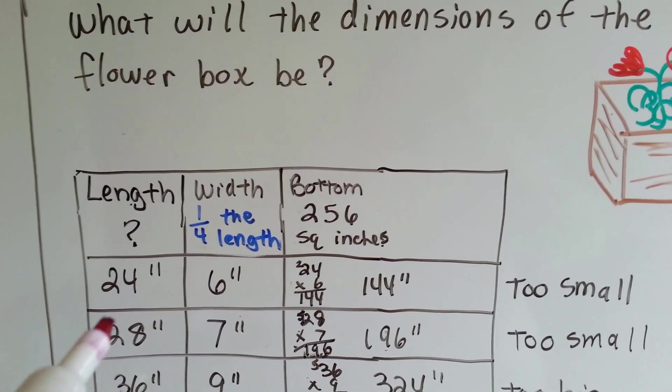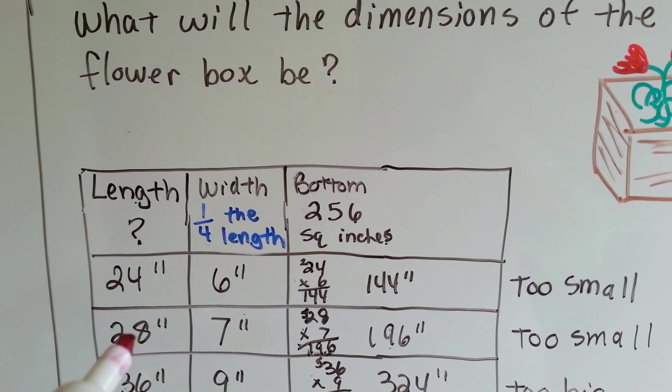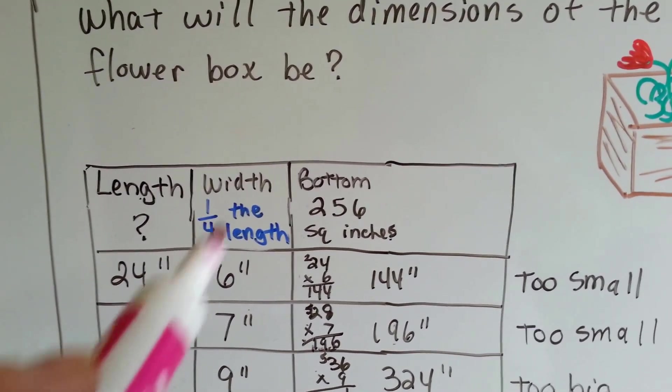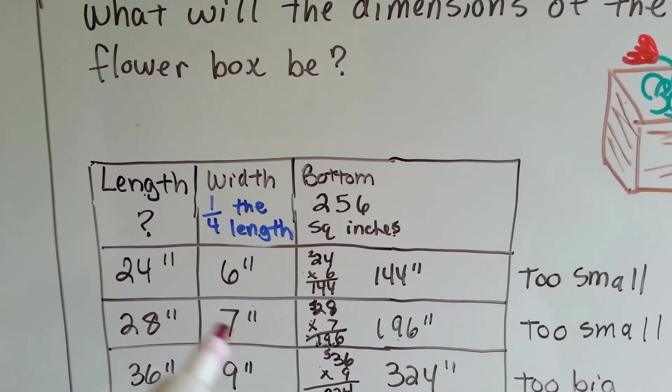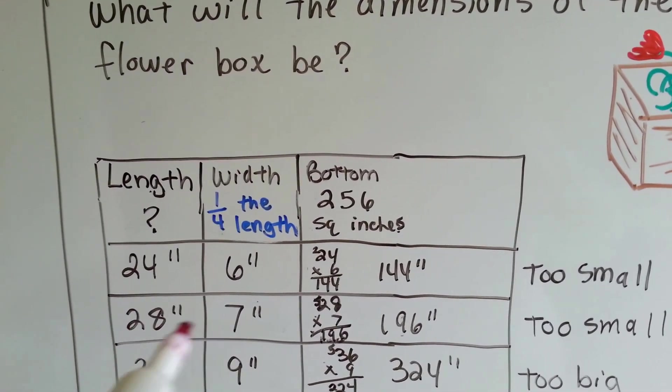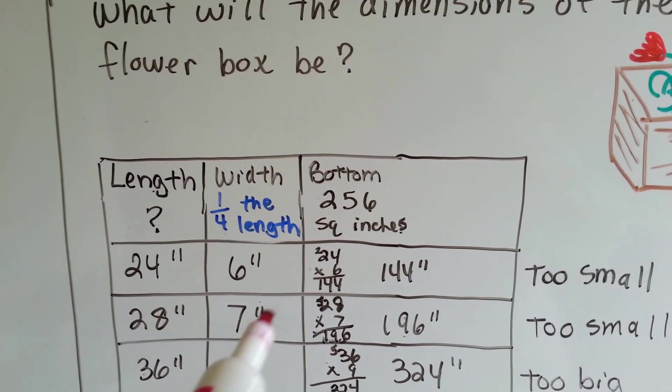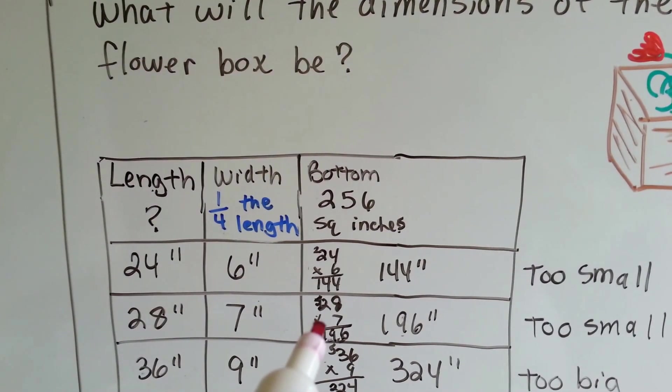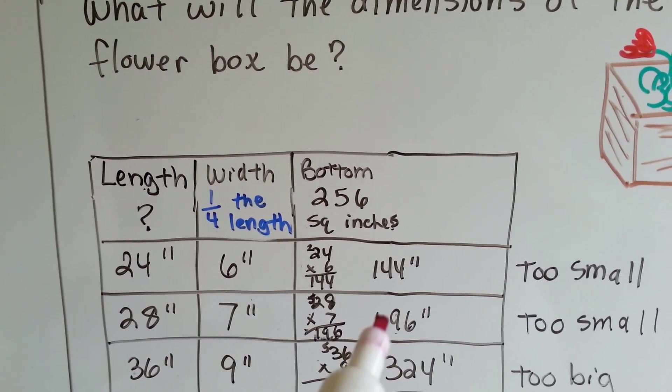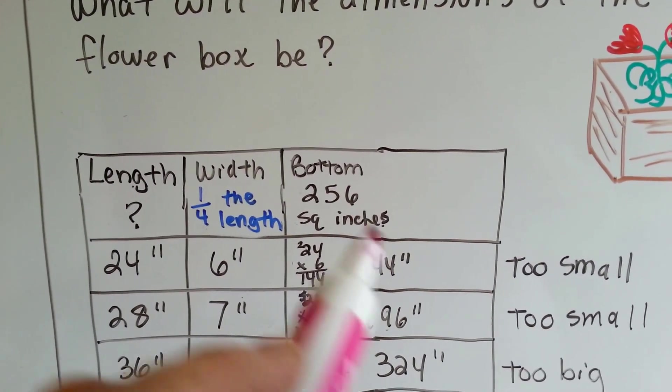So I went up. I tried twenty-eight inches, because I needed to get a fourth of it to be the width, and I knew seven times four is twenty-eight. So I used seven and twenty-eight. When I multiplied them together to get the area, I got one hundred and ninety-six. That's still too small to be 256.